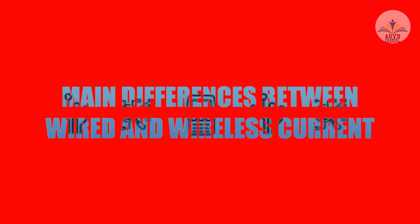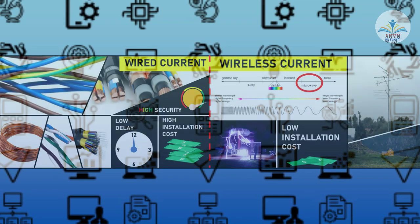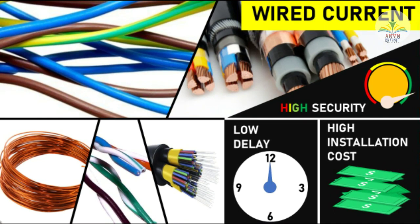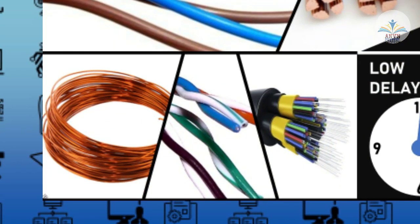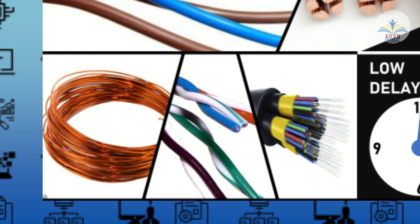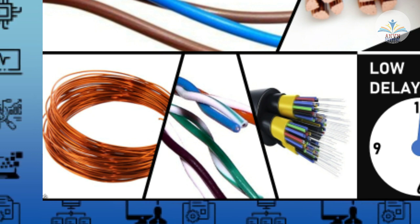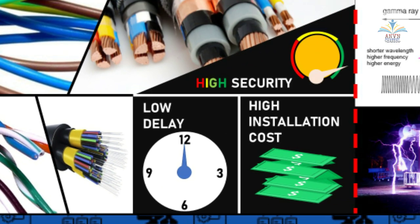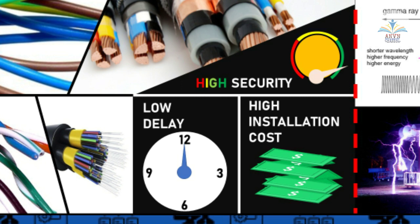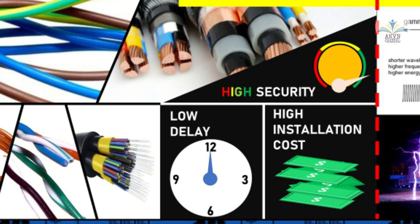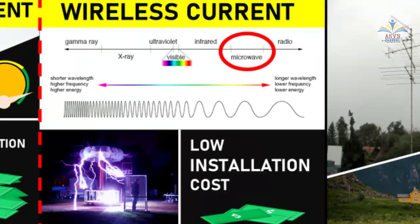Now let's see the main differences between wired and wireless current. Wire, as the term refers to, is any physical medium connected through wires and cables — these can be copper wire, twisted pair, or even fiber optic. Wired connectivity is responsible for providing high security with high bandwidth for each user. It is considered highly reliable and incurs very low delay. However, wired connectivity also comes with high installation cost.